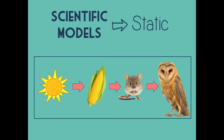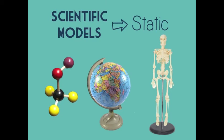A diagram of a food chain is a static model because you cannot change a variable to test an idea. Other examples of static scientific models are the human anatomy skeleton model, molecular model sets, and the world globe.